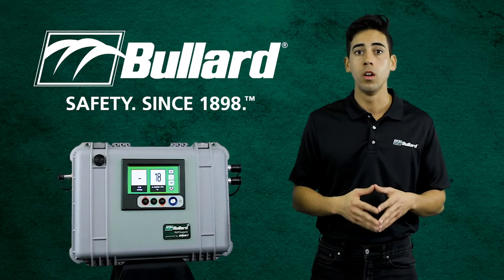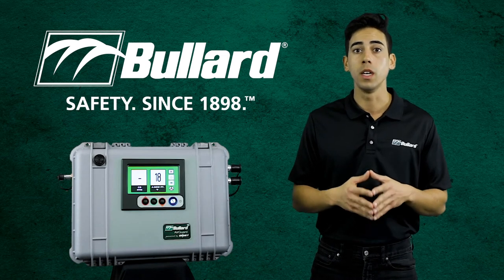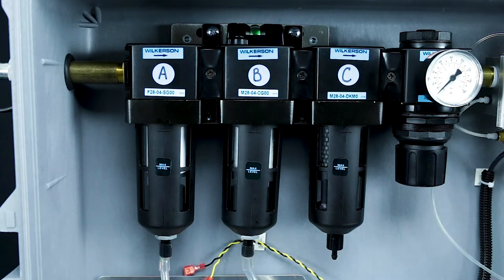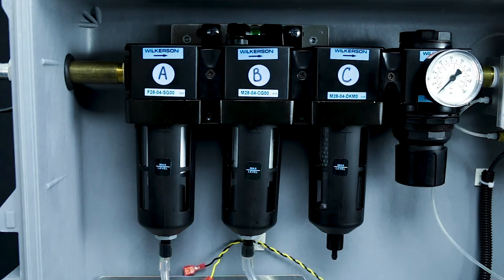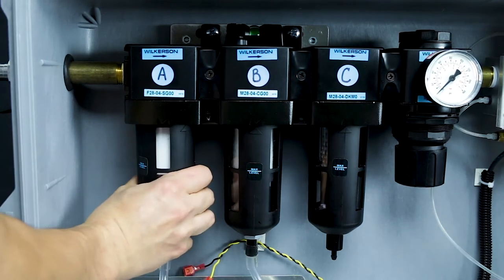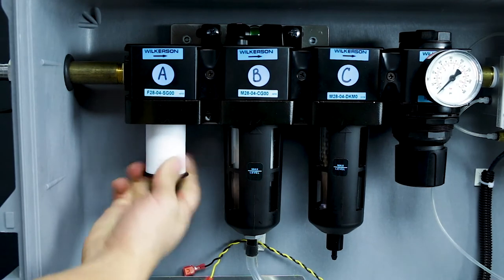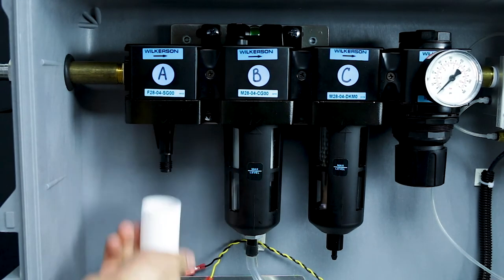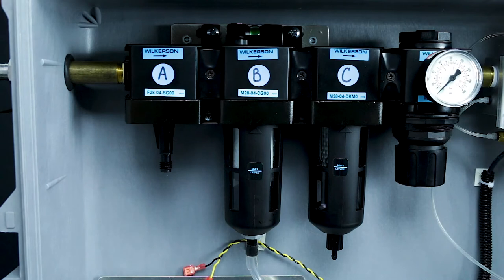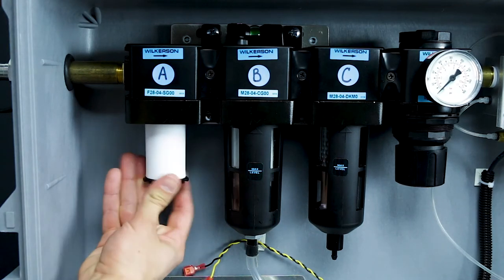After removing the filter bowl, the filter component will be accessible. For Position A, the 5 micron filter, twist the scalloped black plastic connector to the left at the base of the filter. Rotate and remove. Place the new filter on top of the connector and twist right until secure.